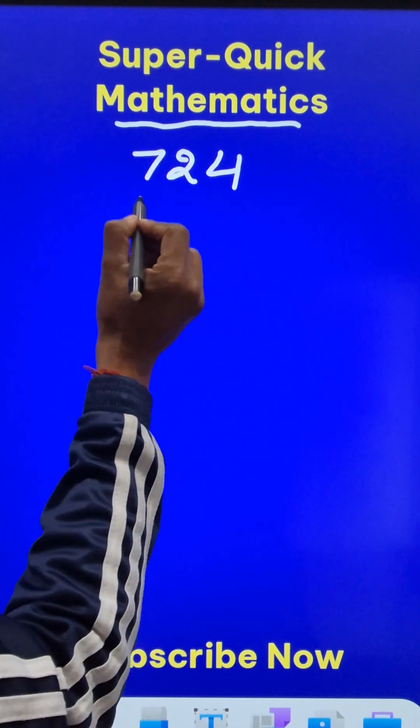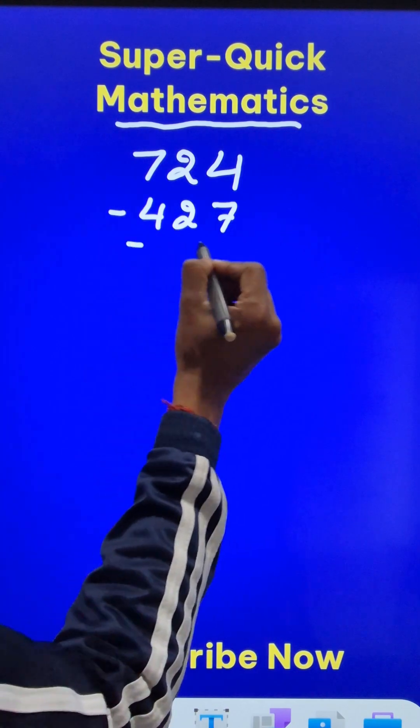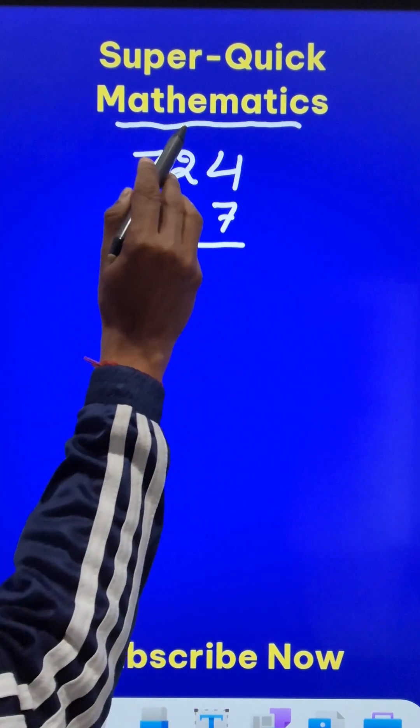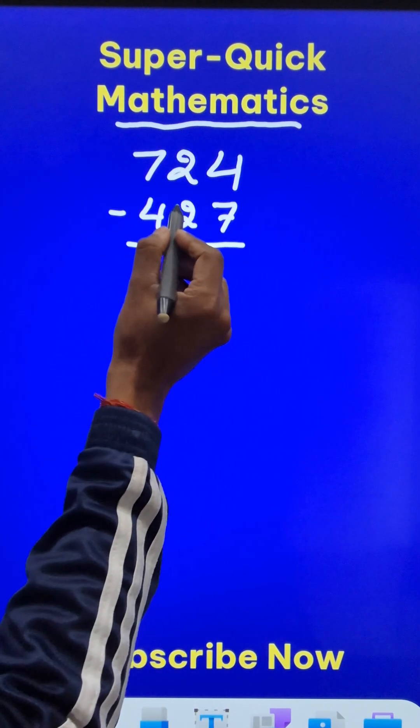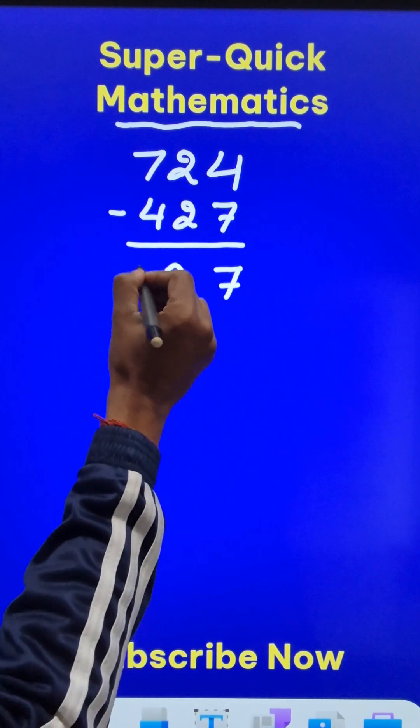Ask him to write the number the other way around, 427, and subtract the larger number and the smaller number. So whichever is larger, he has to write it on the top and the smaller one at the base. Then he will subtract these and get 297.